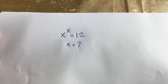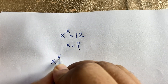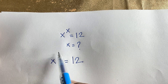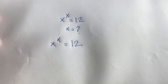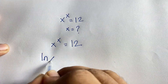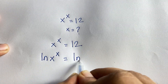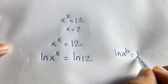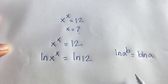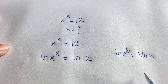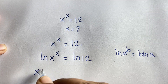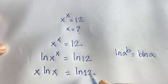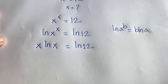Our question is x to the power x is equal to 12. Now I move this exponent x to the front by applying natural log to both sides: ln(x^x) = ln(12). Using the logarithm rule ln(a^b) = b·ln(a), this exponent moves to the front, giving us x·ln(x) = ln(12).